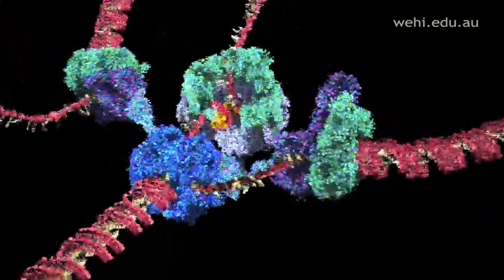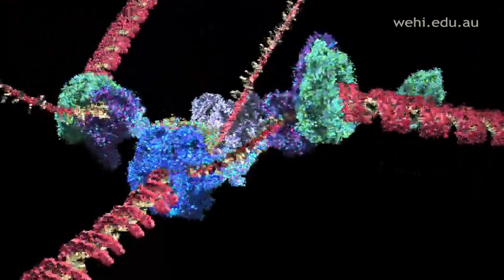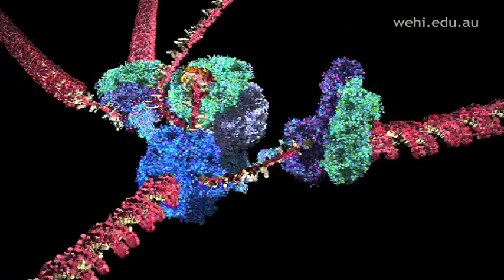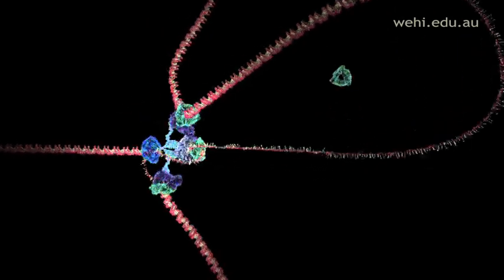The DNA to be copied enters the production line from bottom left. The whirling blue molecular machine is called helicase. It spins the DNA as fast as a jet engine as it unwinds the double helix into two strands.